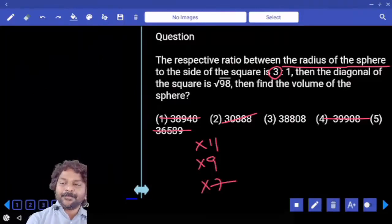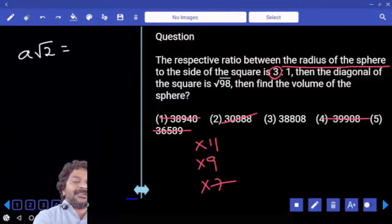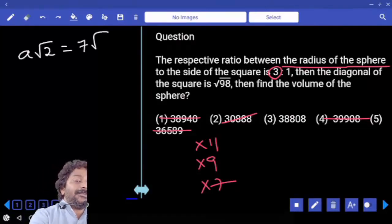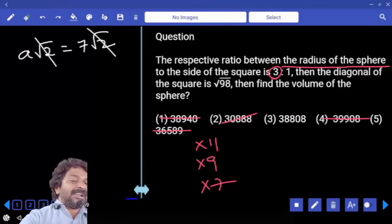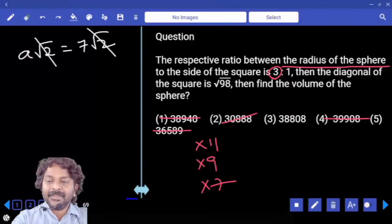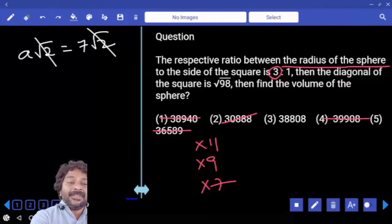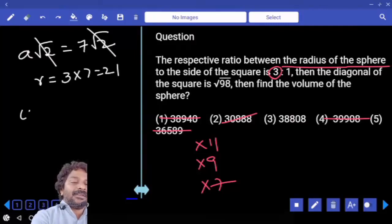Otherwise, we have to calculate. Diagonal, a root 2 is equal to under root of 98. 98 can be written as 2 into 49. That is 7 root 2 only. Root 2 root 2 gets cancelled and a is equal to 7. Which is equal to one part, right? Then, radius of the sphere is 3 parts, which is 3 into 7, that is 21.